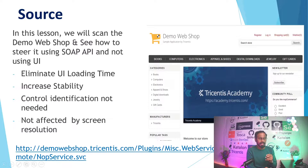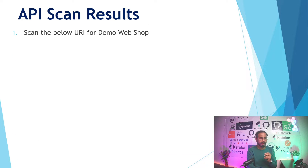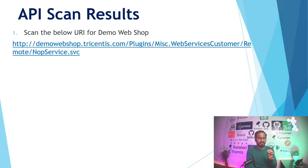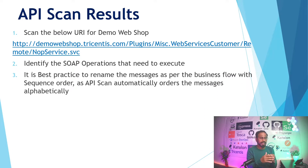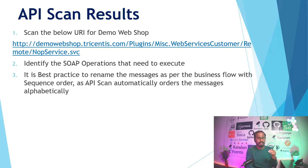The following URI is what we'll use to scan all the API services for our demo webshop. We will scan this URI to identify all the SOAP operations needed to automate our end-to-end test case. It is best practice to rename the messages according to the business flow with a sequence order, as we did in earlier REST sessions — since APS scan automatically orders messages alphabetically.